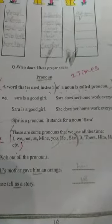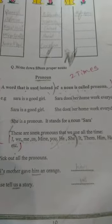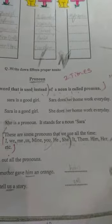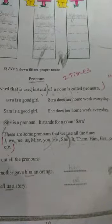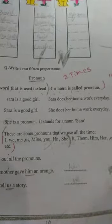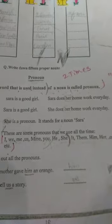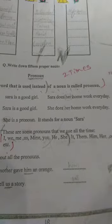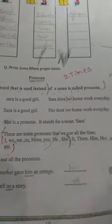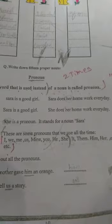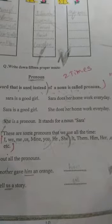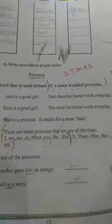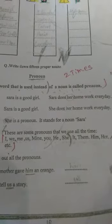Sarah is a good girl. The noun here is Sarah. Instead of repeating Sarah, we can write 'she' in Sarah's place. Sarah does her homework everyday — we can write: She does her homework everyday. She is a pronoun used in place of the noun Sarah.